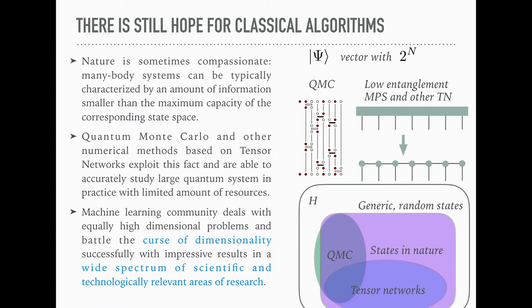Because of the nature of the entanglement properties of these many body systems, we can take a very generic wave function and use, for instance, matrix product states and density matrix renormalization group, and still get an understanding of many body systems. What I wanted to point out, which was already pointed out in the previous talk, is that the machine learning community deals with equally high-dimensional problems. They still battle this curse of dimensionality pretty successfully, with impressive results in a wide spectrum of scientific and technologically relevant research areas.